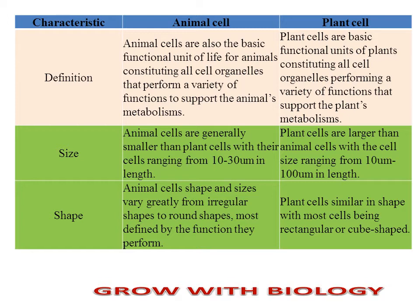When we talk about the difference between an animal cell and a plant cell, it is in the size. Plant cells are larger whereas animal cells are smaller. The size of plant cells ranges from 10 micrometers to 100 micrometers in length, while animal cells are only up to 30 micrometers. If we talk about shape, animal cells vary and are very irregular, also occurring in round shapes. But in plant cells, the shape is similar — either rectangular or cube-shaped.